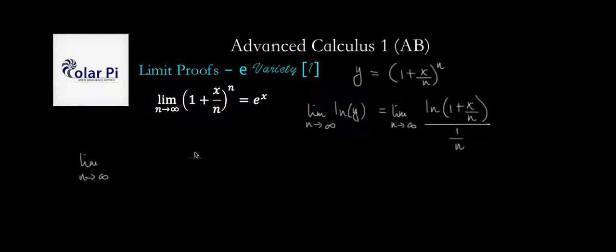Yeah, so derivative of the numerator is going to be 1 divided by 1 plus x over n, but we're not done, right? The derivative of the natural log is 1 over whatever is inside it, and that's this, but then here we have to multiply by the derivative of that, which is required by chain rule, right?